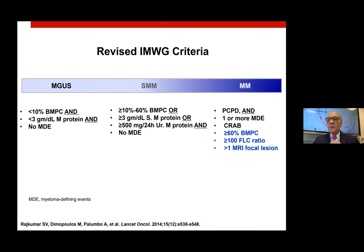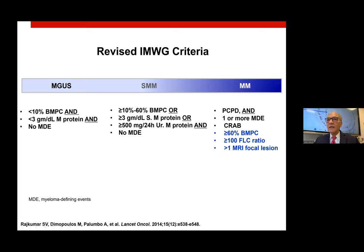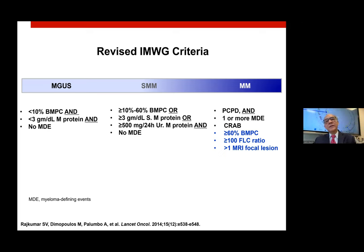In the newer world, we have slight changes in the definition. We do bone marrow and look for whether there are lots of myeloma cells — if it is more than 60%, we call it myeloma and start treating patients. If the free light chain ratio is very high, we don't necessarily start treatment but we think about it very seriously. And if there is a bone lesion by MRI or PET scan, we begin to utilize that as a diagnosis of myeloma and treat the patient.